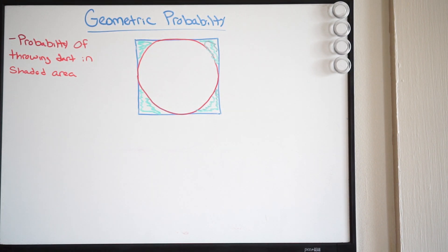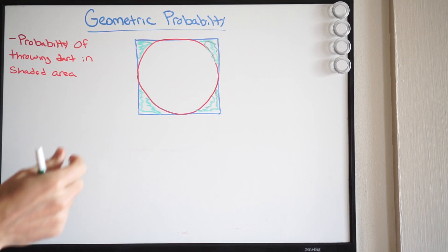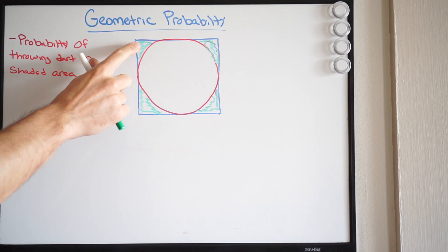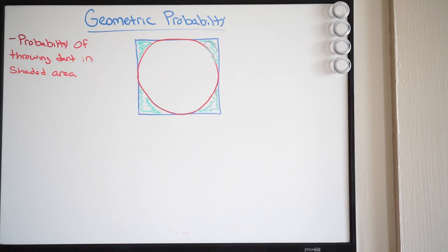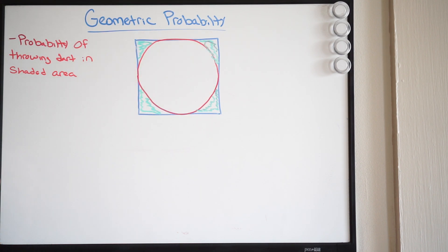So before we get into this, let's first talk about what we need to find. When we're talking about the probability, it's going to be out of something. So what we need to essentially do here is find the area of this shaded region, and that's going to be out of the total area. The area of our shaded region out of the total area — which is going to be the area of the square — will give us our probability.